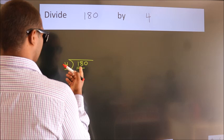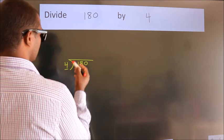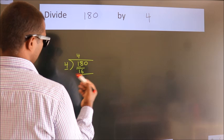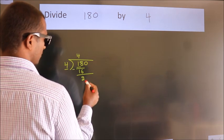A number close to 18 in the 4 table is 4 fours, which is 16. Now we should subtract. We get 2.